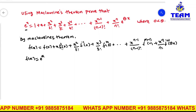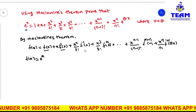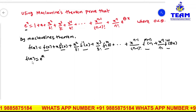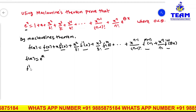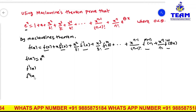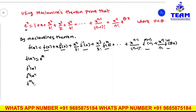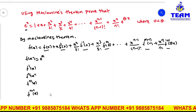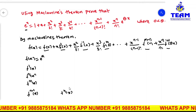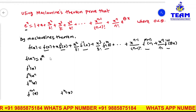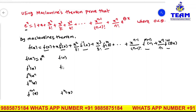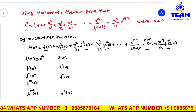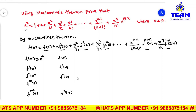From f(x), we need to find f(0), f'(0), f''(0), f'''(0), and so on, up to f^n(θx). So from f(x), first we need to find f'(x), f''(x), similarly f'''(x), the fourth derivative, fifth derivative, up to the (n-1)th derivative and the nth derivative. After that, we substitute x = 0 to get f(0), f'(0), f''(0), and so on.